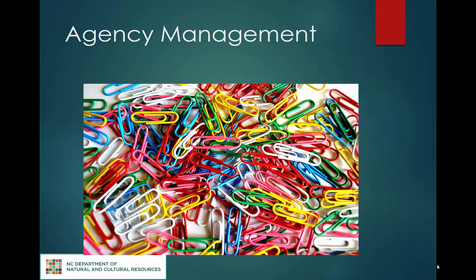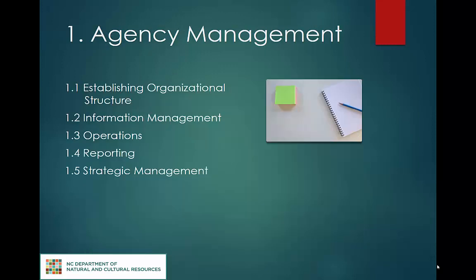Agency management is the overarching management that occurs in all government agencies. Establishing organizational structure includes records such as histories and organizational charts. Information management encompasses inventories, statistics, and tracking materials. Operations includes routine administrivia. Reporting covers both reports written by and received by the agency. Strategic management includes policies, procedures, and plans.